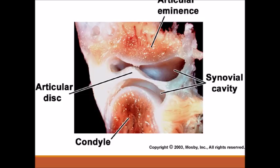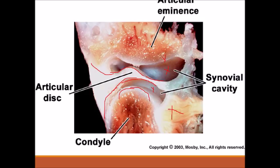This is the temporomandibular joint in the opening stage. Here is the head; here is the lower part of the disc — it is concave. This is the upper part of the disc: the convex part fits into the glenoid fossa, and the concave part fits to the articular eminence. The upper synovial cavity and the lower synovial cavity are visible. The lower zone and upper zone of the disc are shown, and anteriorly the lateral pterygoid muscle is visible. The disc divides the joint into two cavities — upper and lower synovial cavities.